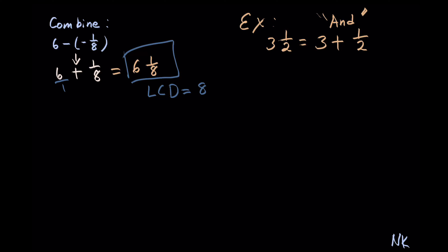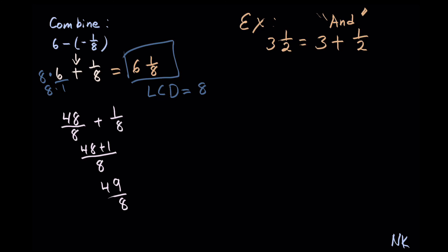6 is out of 1. We would need to multiply 1 by 8. Whatever we do to the denominator, we would have to do the same thing to the numerator. And we would get 48 out of 8 plus 1 out of 8. Now we bring everything under common denominator of 8 and we combine numerators. So 48 plus 1 gives us 49 out of 8. And this would be our fraction solution.